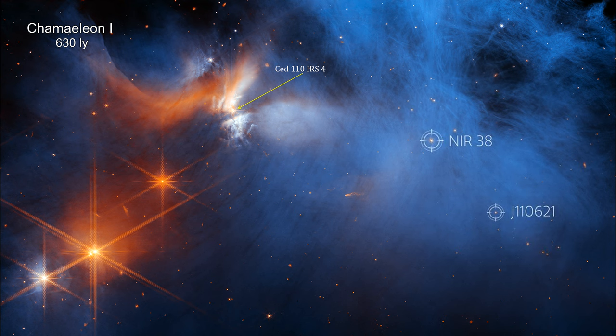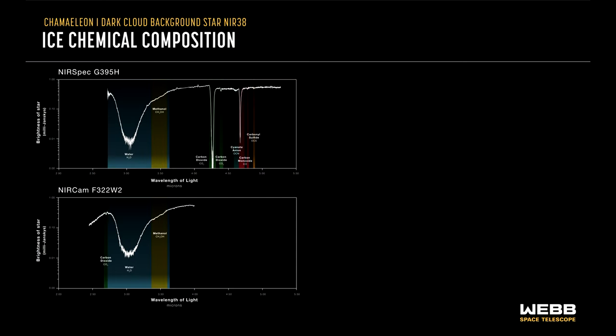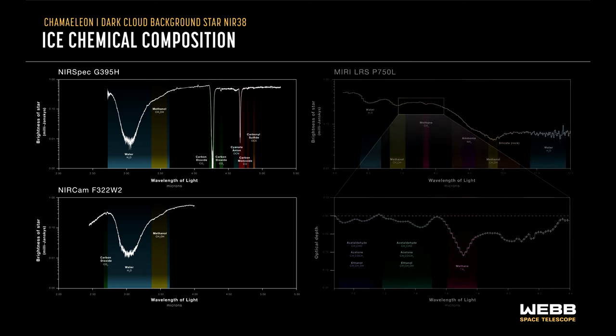The two background stars used in this study are circled. The molecules in the ices absorb the starlight passing through them. This creates a dip in the light that reaches us for each element in the ice.